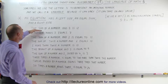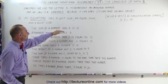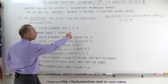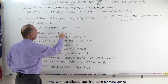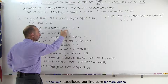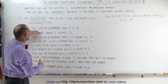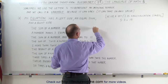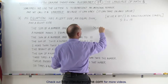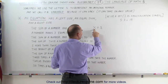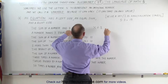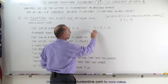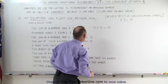Here we have the sentence: the sum of a number and 8 is 12. The word 'is' represents the equal sign, and the word 'and' represents addition. So the sum of a number and 8 can be written as x plus 8. That's an equal sign, so we set it equal to 12: x + 8 = 12.